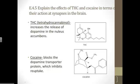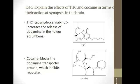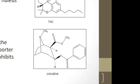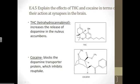THC increases the release of dopamine in the area of the brain called the nucleus accumbens. Cocaine blocks dopamine reuptake — it's not that it increases dopamine release, but the dopamine that is released stays in the synaptic cleft longer before going back into the presynaptic neuron via endocytosis. Therefore, that has the same ultimate effect: an increase in dopamine transmission.